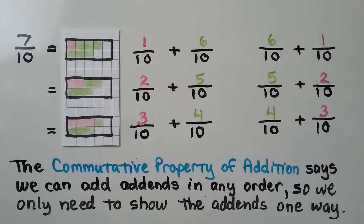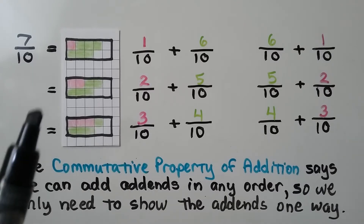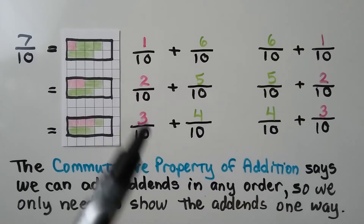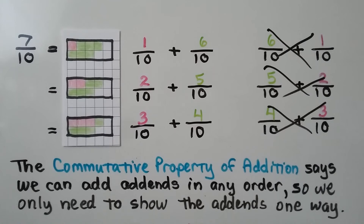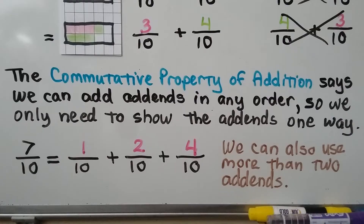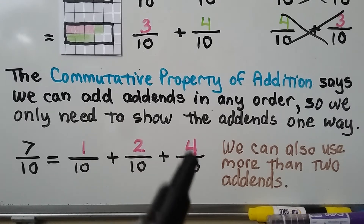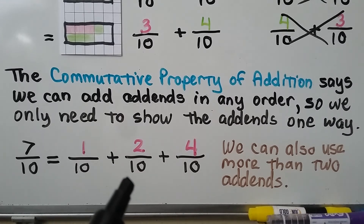So we only need to show the addends one way. If we need to list the addends for 7 tenths, we only need to list them one way — we don't need to list them in the other order. Because of the commutative property of addition, we can also use more than two addends. We could break the 7 in 7 tenths as a 1, a 2, and a 4, and write 1 tenth plus 2 tenths plus 4 tenths.